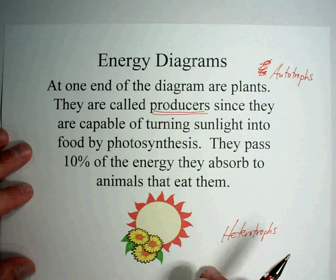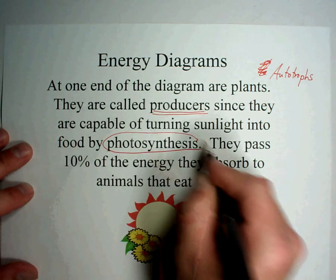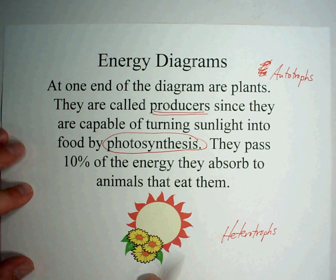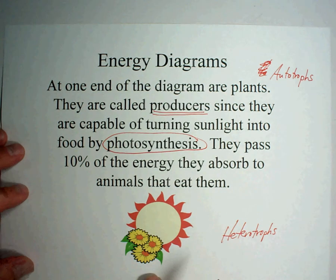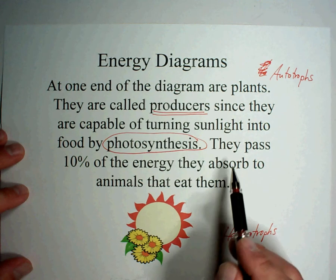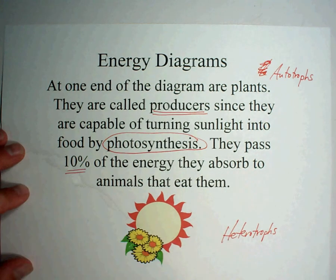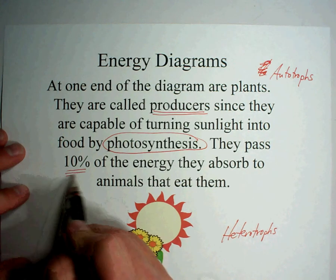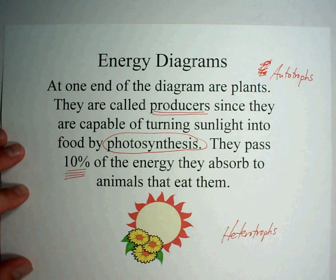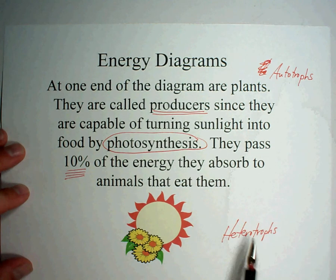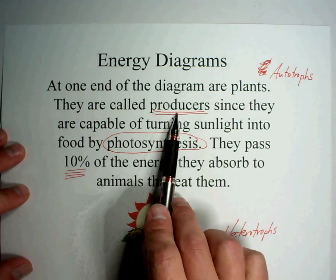Plants take sunlight using the process of photosynthesis to produce their own food. If it weren't for the sun, all of the energy in the world would be non-existent — all of it begins with the sunshine that hits the surface of the earth. Plants pass 10% of the energy they absorb onto the animals that eat them. That's why we have to eat such a high quantity of food — we only get 10% from each thing we eat. Sometimes you'll see the words autotrophs and heterotrophs, but typically in food webs you'll see the word producers.